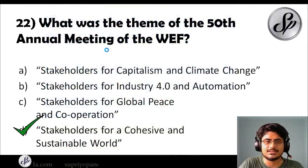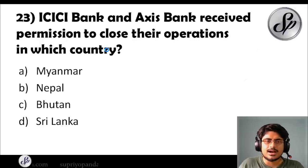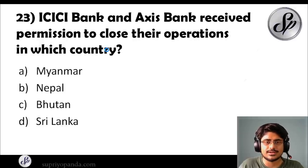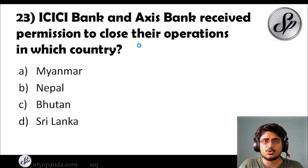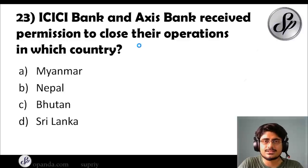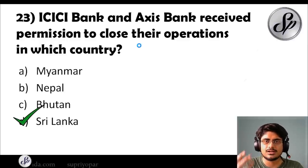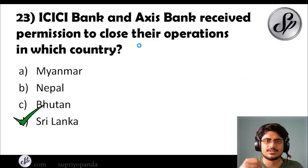Question twenty-three: ICICI Bank and Axis Bank received permission to close their operations in which country? The answer is Sri Lanka. The Central Bank of Sri Lanka has permitted them to close their operations in that country.